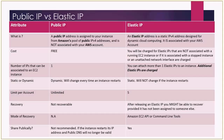An elastic IP address is a static IPv4 address designed for dynamic cloud computing, and it is associated with your AWS account. Regarding cost, a public IP address is free — Amazon does not charge you for providing a public IP address. However, for an elastic IP address, you will be charged if it is not associated with a running EC2 instance.